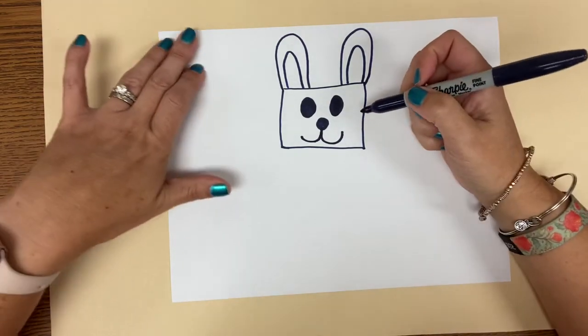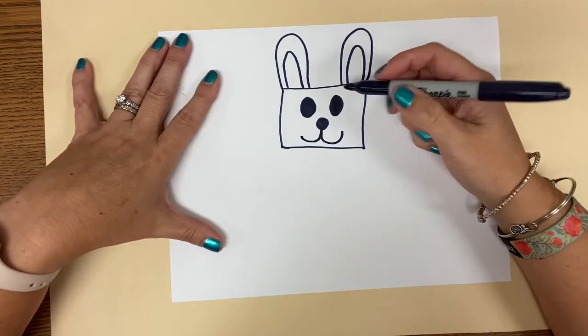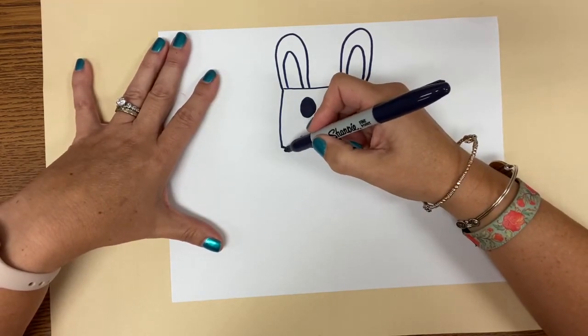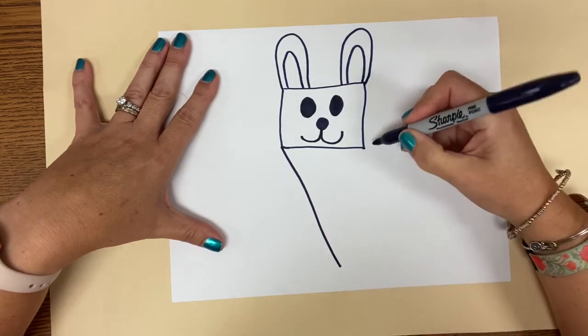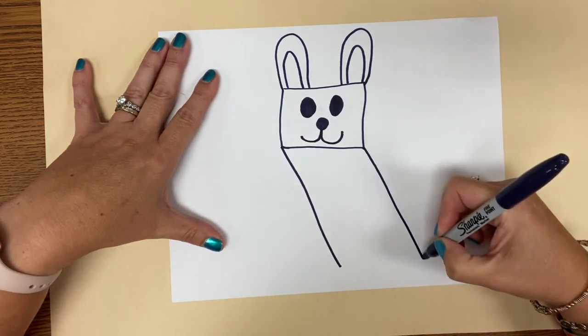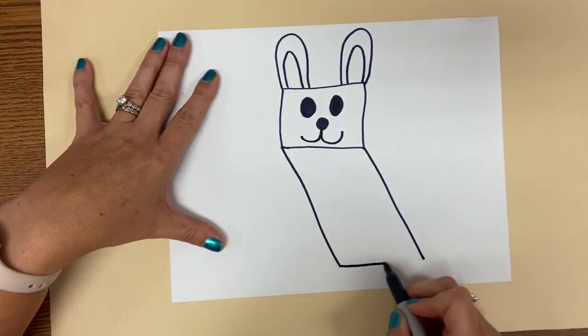His body is kind of like a diagonal rectangle. So you're going to do a diagonal line down, diagonal line down, and then you're going to connect that.